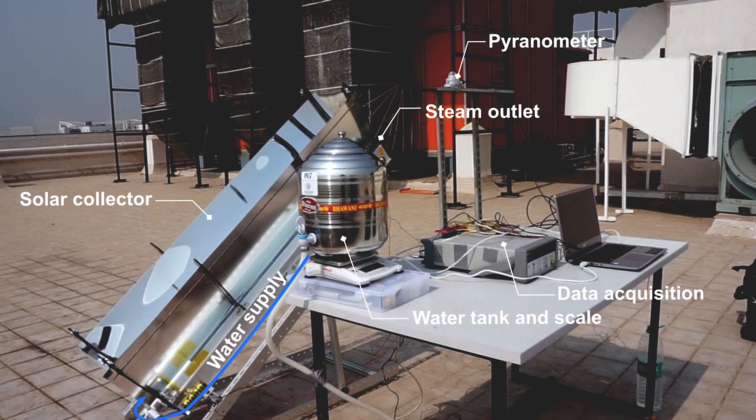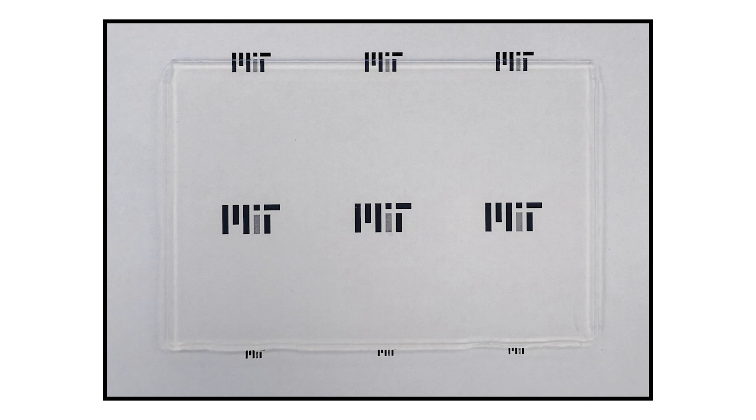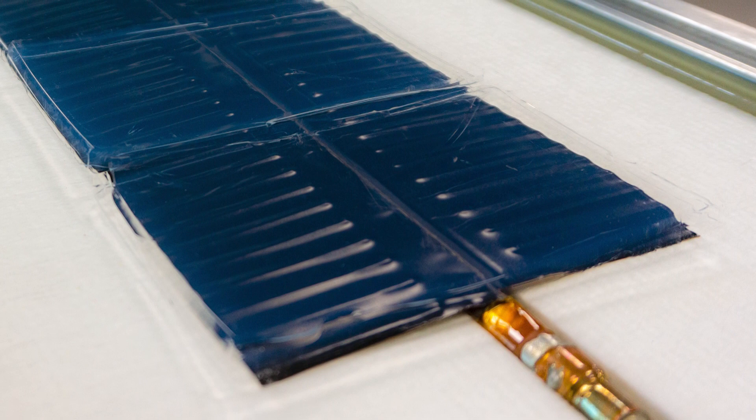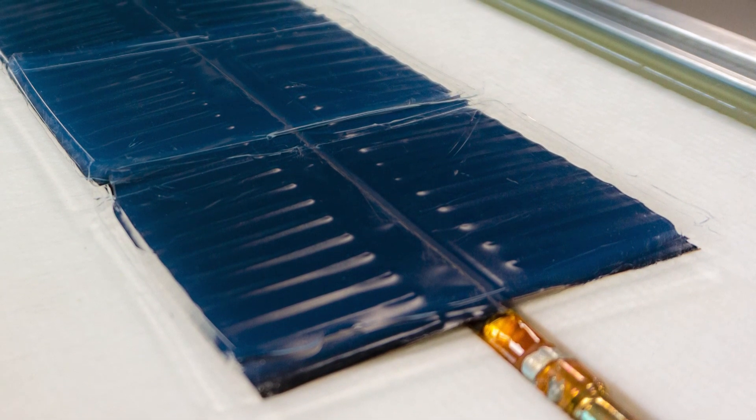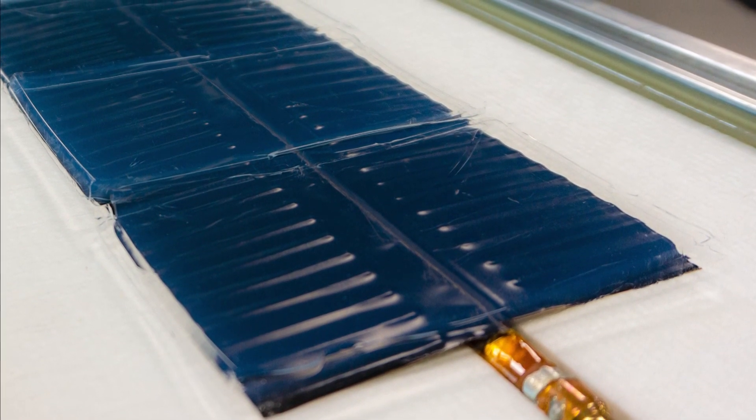The key to their new system is the use of optically transparent aerogel. The material is essentially a lightweight foam made of silica and consists mostly of air. Light as it is, the material provides effective thermal insulation, reducing the rate of heat loss by tenfold.